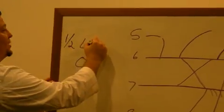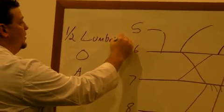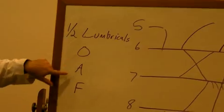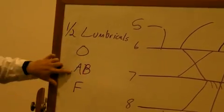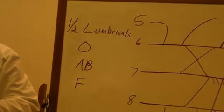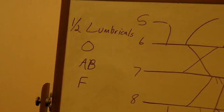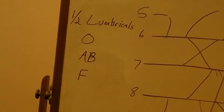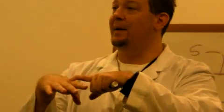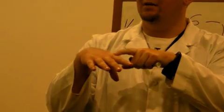So one half of the lumbricals, and then the opponens, abductor, and the flexor pollicis. So one half of the lumbricals. Lumbricals are the puppet muscles you guys learned today. Puppet muscles. They go from the flexor digitorum profundus tendon to the extensor expansion of the finger on the same digit. So it wraps around the inside of the finger, and so it causes extension of the interphalangeal joints of the fingers while causing flexion at the metacarpophalangeal joint. That's what the lumbricals do. That motion just like that.